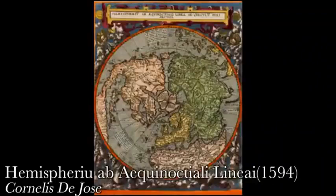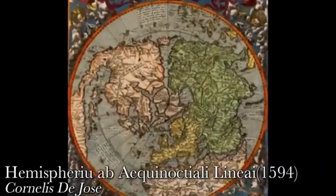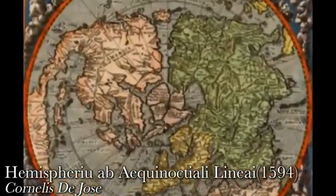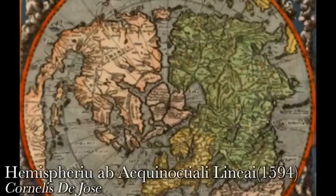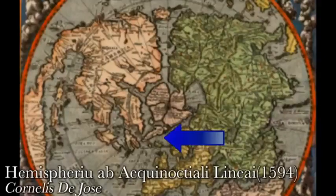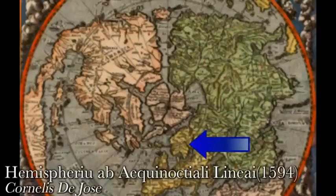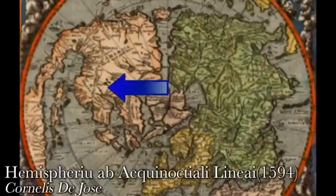This map is from 1594, made by Cornelius de Jose. At first glance we notice how magnified the North Polar region is compared to the previous maps. Instead of Oronse Fine's version with large bodies of water separating the islands, we have the four continent system divided by thin canals, which meet at the center, where there is again seemingly a massive rock. For reference we have Greenland, Scandinavia, Iceland, and Canada.